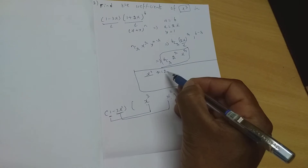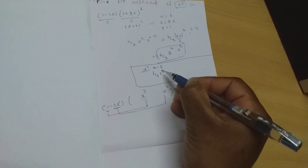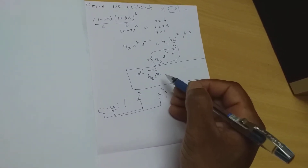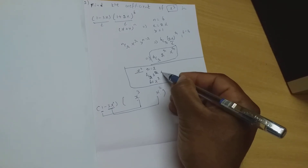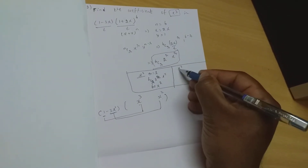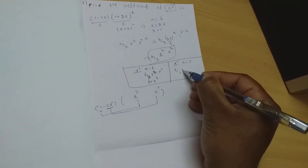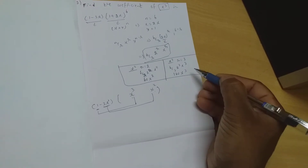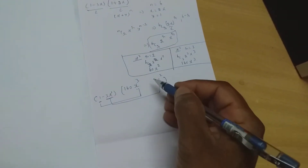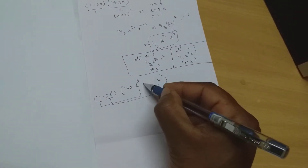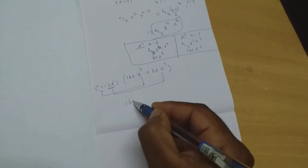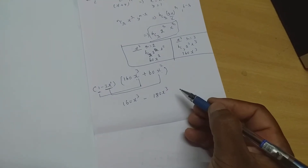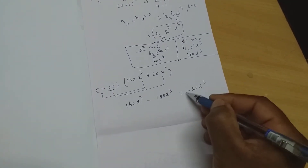With r = 2: 6C2 · 2² = 60, giving 60x². With r = 3: 6C3 · 2³ = 160, giving 160x³. So before x³ I place 160 and before x² I place 60. Multiplying: 1 × 160x³ gives 160x³, and −3x × 60x² gives −180x³. This results in 160x³ − 180x³ = −20x³.